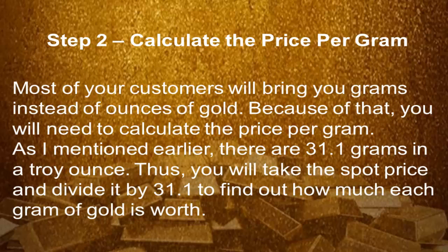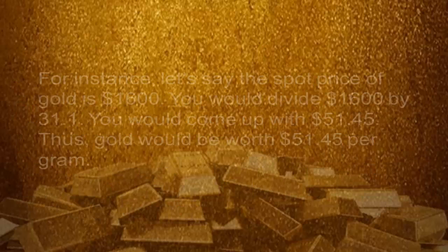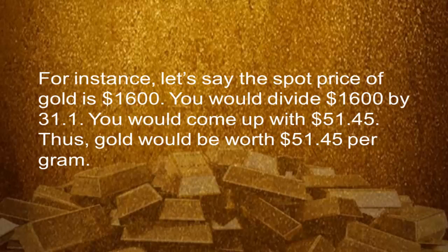Step 2: Calculate the price per gram. Most of your customers will bring you grams instead of ounces of gold, so you will need to calculate the price per gram. As I mentioned earlier, there are 31.1 grams in a troy ounce. Thus, you will take the spot price and divide it by 31.1 to find out how much each gram of gold is worth. For instance, let's say the spot price of gold is $1,600. You would divide $1,600 by 31.1, which gives you $51.45 per gram.